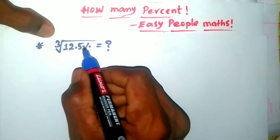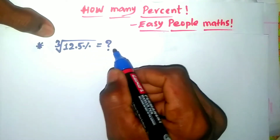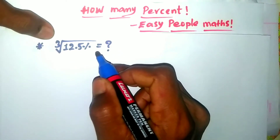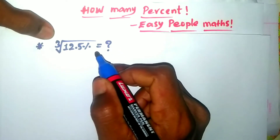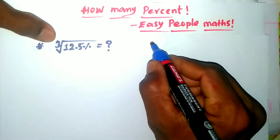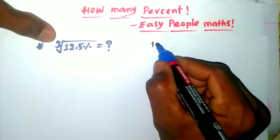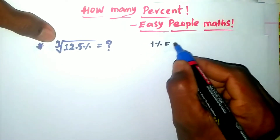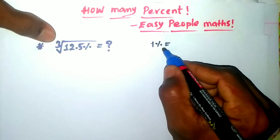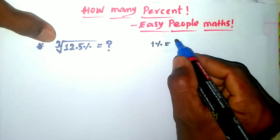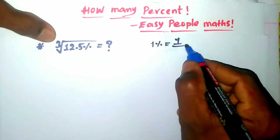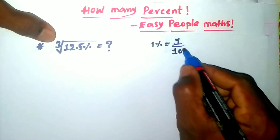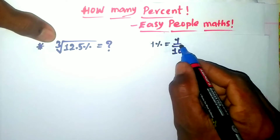The question is: cube root of 12.5% is equal to what? First of all, what do we need to solve? 1% is equal to 1 divided by 100. We need to solve this problem.